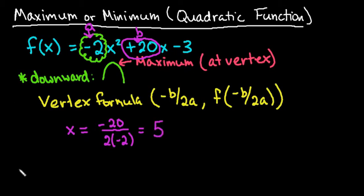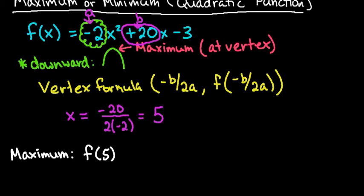And now to find the maximum. The maximum actually occurs at the y-coordinate, so it is the y-coordinate of the vertex. We're going to plug in 5. We're going to find f of 5 by plugging that into our original equation.